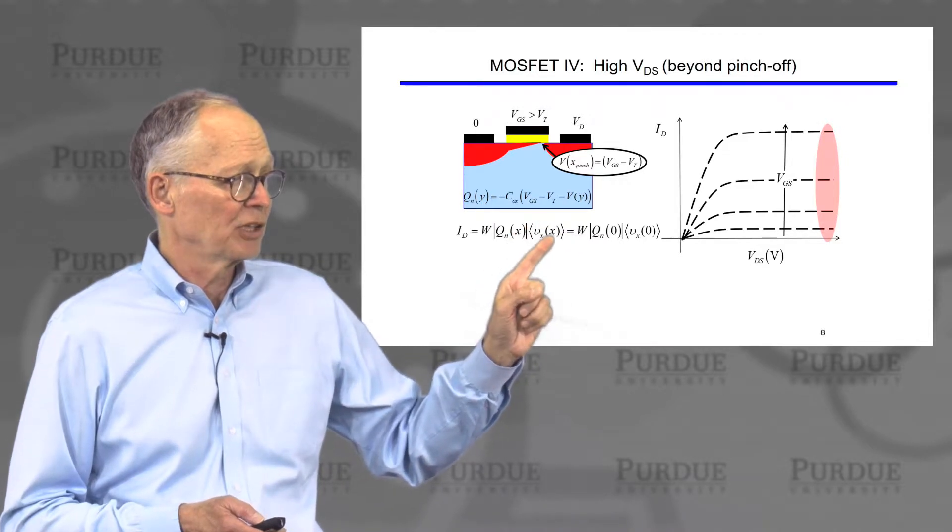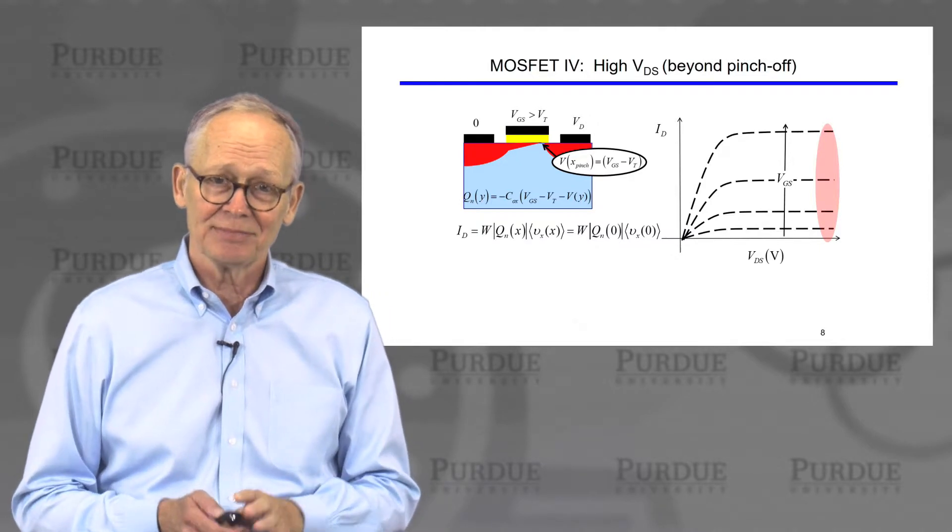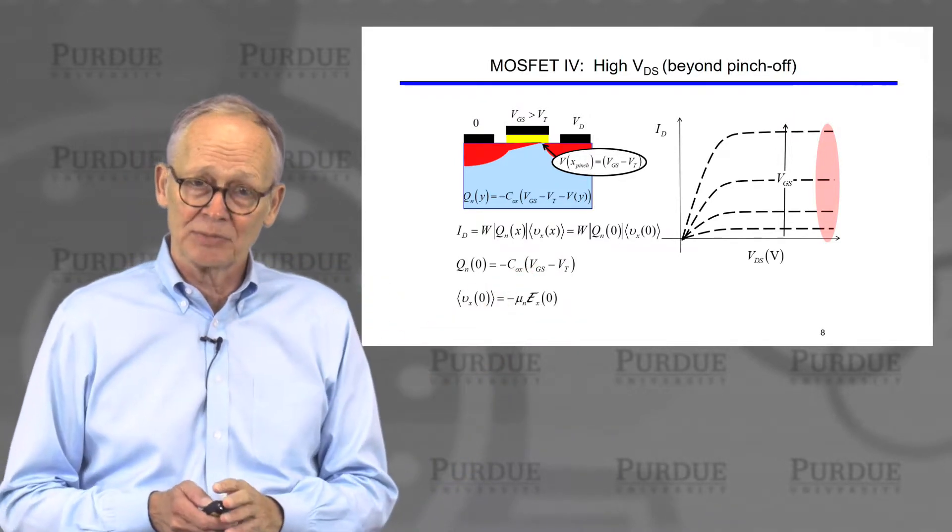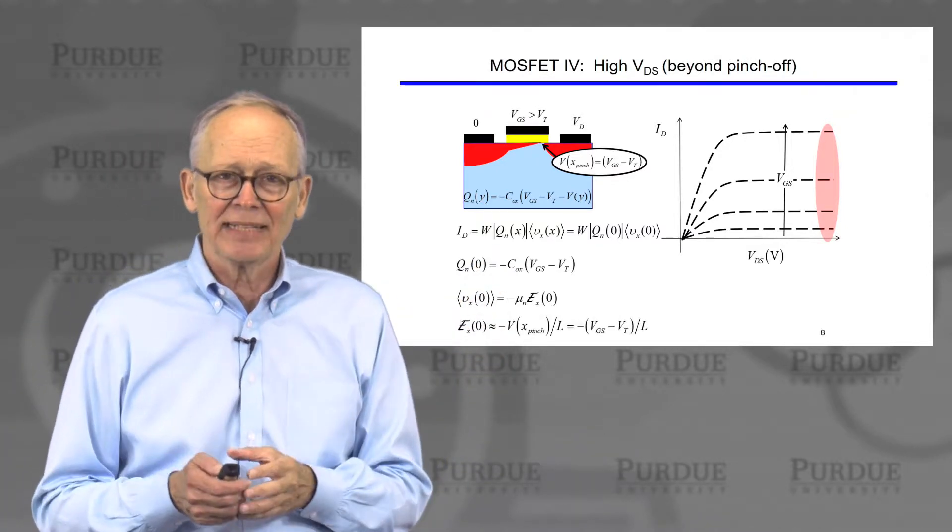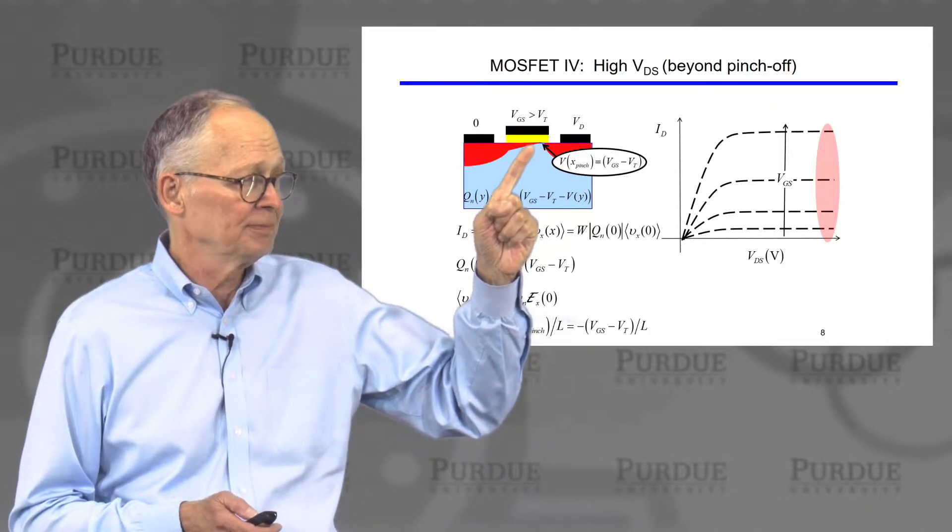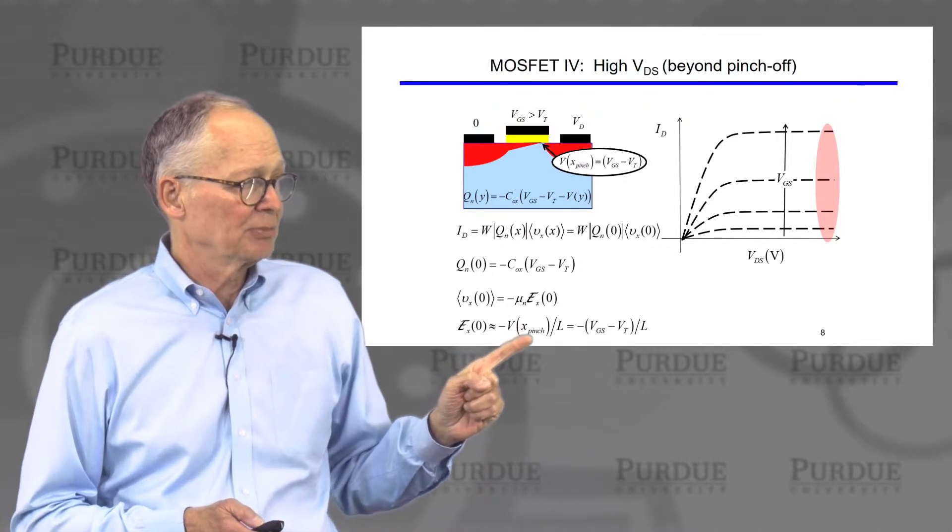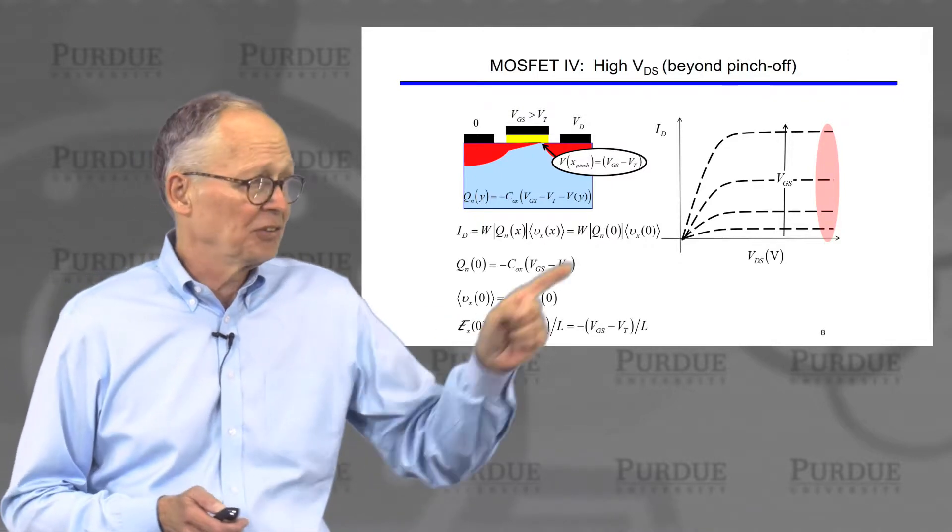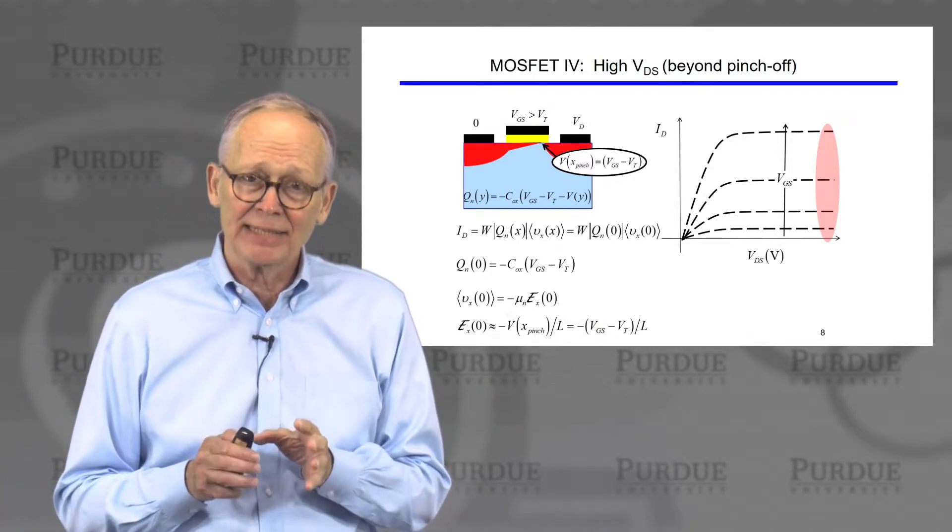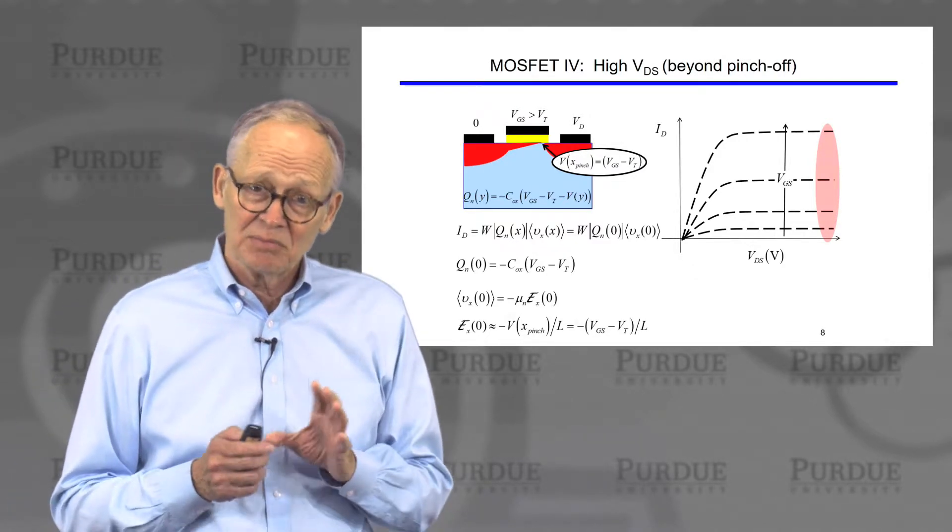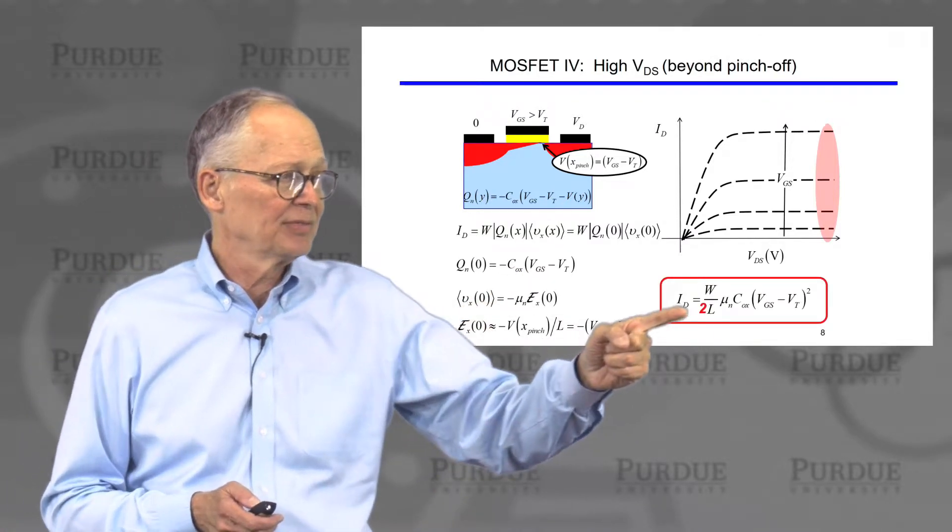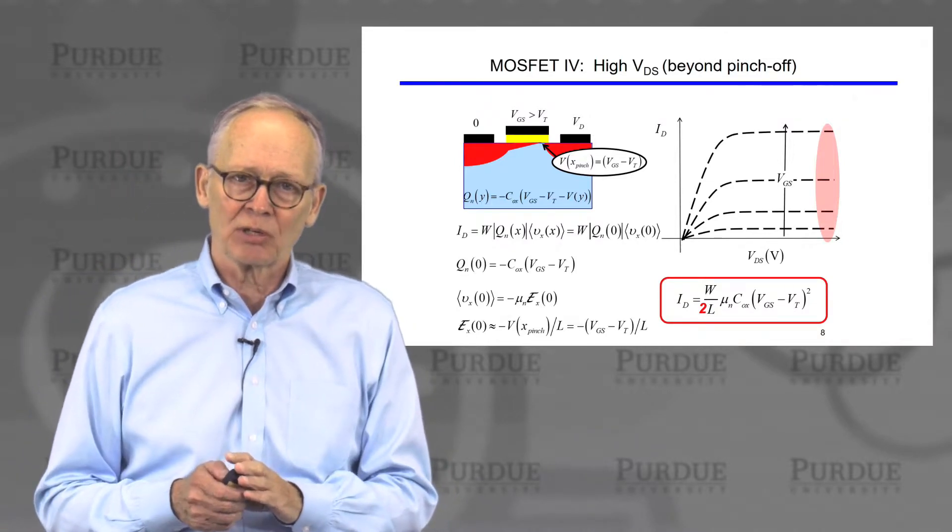We write the current the same way, proportional to charge times velocity. We focus on the charge at the beginning of the channel, the so-called virtual source, because we know the charge there. It's Cox(Vg - Vt). The velocity is still mobility times electric field. The electric field we would estimate as the voltage across the channel. The voltage at the pinch-off point is not the drain voltage, it's the pinch-off voltage, Vg - Vt. It's zero at the other end, so the voltage across the channel is the pinch-off voltage. Zero at the source end, pinch-off voltage is Vg - Vt. So the average velocity in the channel is in the negative direction, Vg - Vt divided by the length of the channel. But it turns out that the electric field is really non-linear. We need the electric field at the source where we know the charge, and that turns out to be one-half of the average value. So we derived our classic square law MOSFET characteristic.